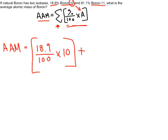The sigma then means add up the other one. However many, have in this case two, so we'll just do the whole thing again. For boron-11 this time, there's 81.1% all divided by 100, and we multiply that by boron-11's mass number, which is 11.